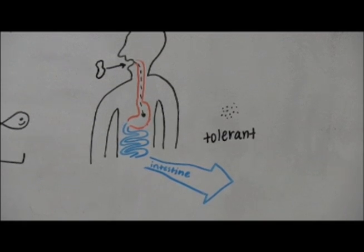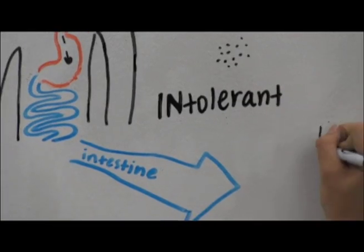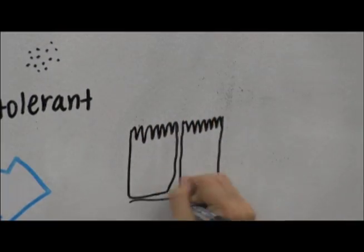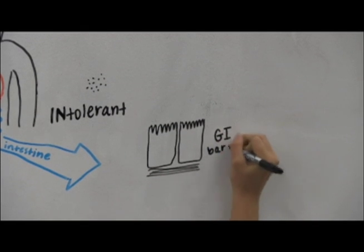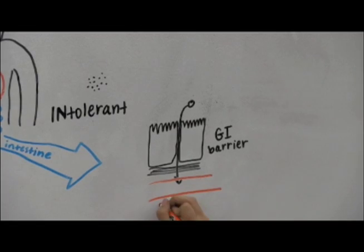But those who are allergic to peanuts are intolerant. Their bodies don't think that peanuts are normal and don't think that they can be a helpful form of energy for the body. Their intestine cannot break down peanuts into small enough pieces, so some peanut proteins make their way through the barrier of the gut and enter the person's blood.